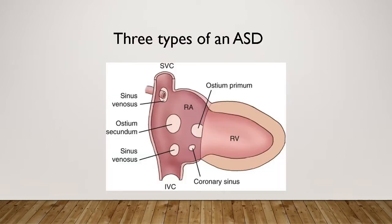Here are the three types of ASDs viewed looking directly at the atrial septum. The SVC is up here and the IVC is at the inferior vena cava. A sinus venosus defect can appear in the area near the SVC at the top, or also near the IVC at the bottom — both areas are highlighted.